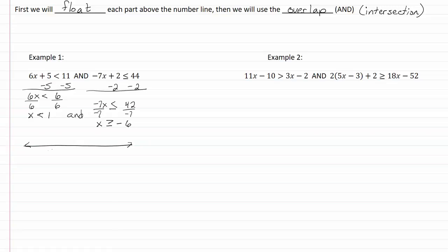Let's put those on the number line. Here's my -6, and here's my 1. -6 is going to be a closed dot, and it says x is greater than or equal to -6, so that means it's going off to positive infinity. And for our 1, it's going to be an open dot, and it says x is less than 1, so that means it's going to be going off to negative infinity.